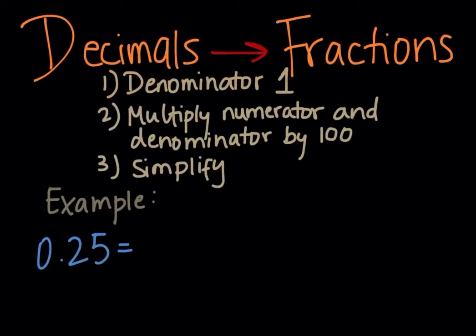Now we go to how to convert from decimals to fractions. There are three steps. It's very easy though. The first step is you take the number and you put a denominator of 1, and then you multiply the numerator and denominator by 100, and then simplify if needed.